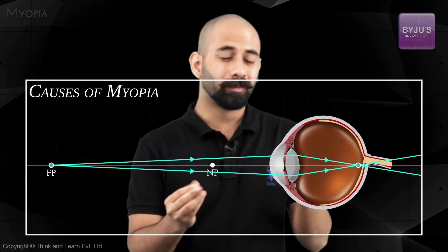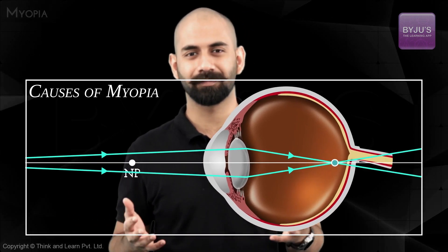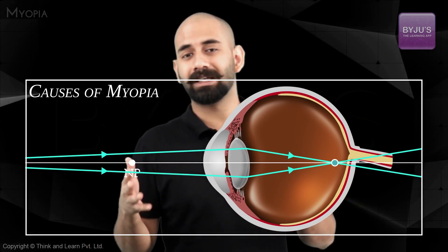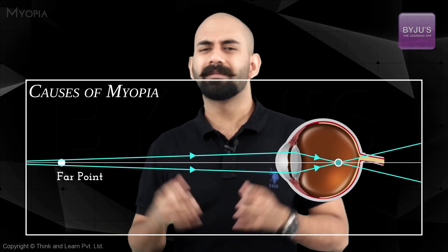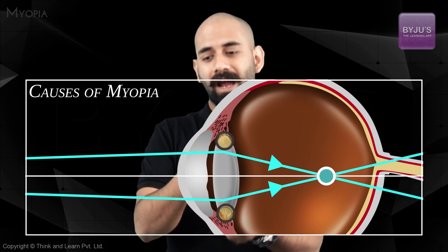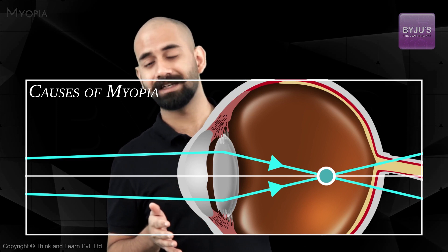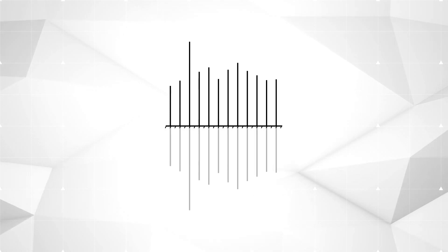There are multiple reasons myopia occurs, but the most common is that the eyeball is simply too big — so big that even at the most relaxed position of the ciliary muscles, the focal length is still shorter than the diameter of the eyeball. Another reason is an issue with the ciliary muscles themselves: at their most relaxed, the focal length is again shorter than the eyeball diameter, so the image cannot form at the retina.